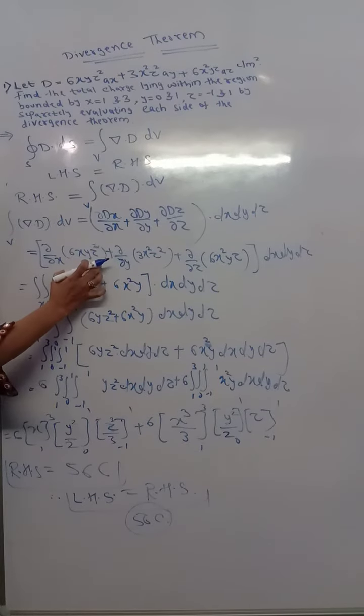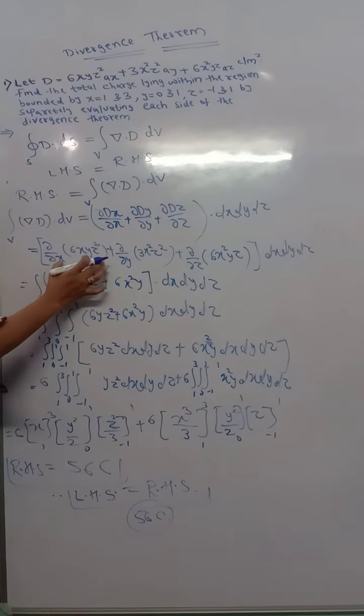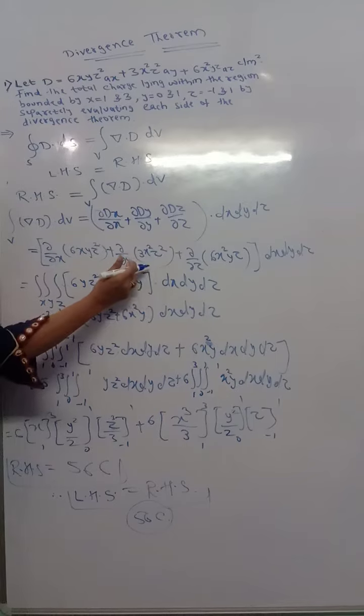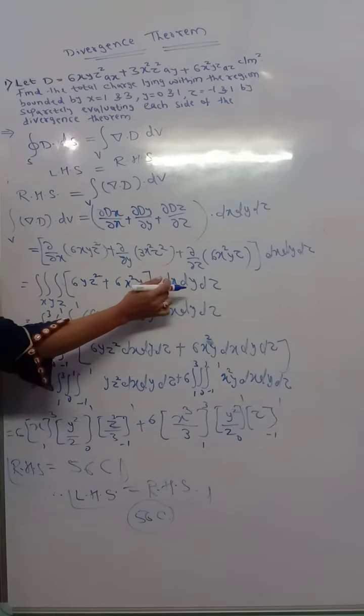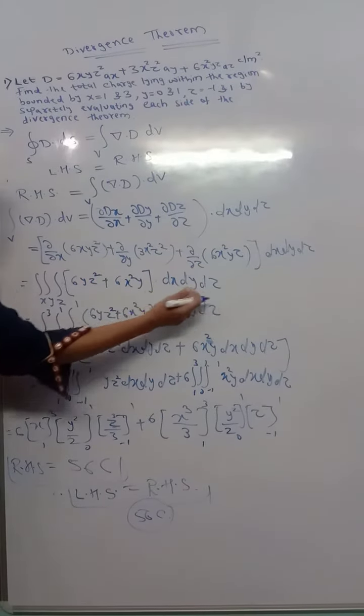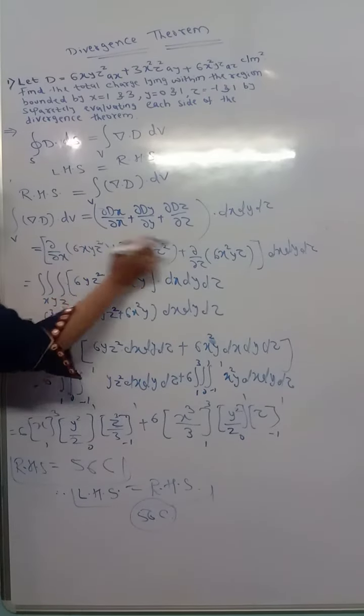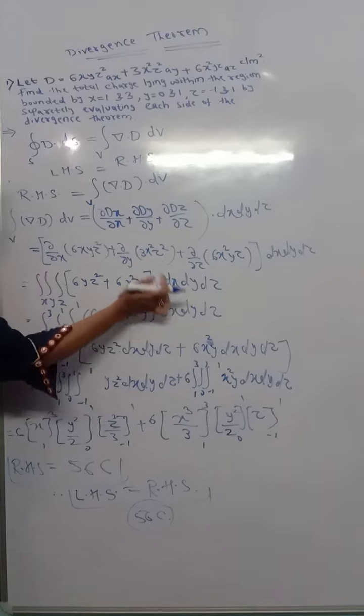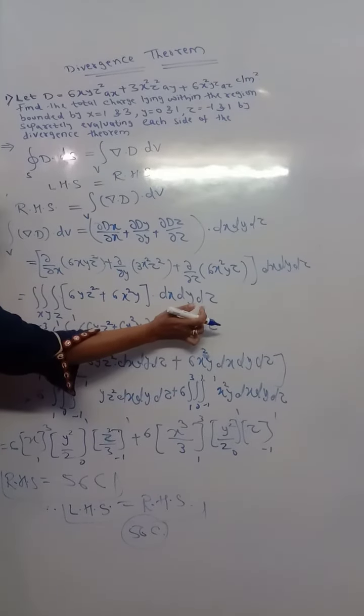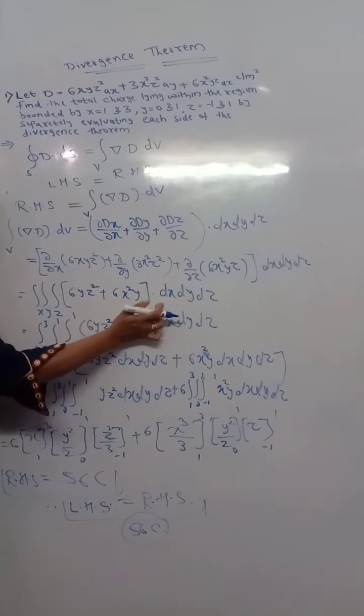So here in this term, xyz is there so there will be the derivation. Here there is no y term, this term will become a zero. Here xyz is there, that's what we are taking is 6x^2y, and entire term. This will consider, this will consider, this term will become as a zero.